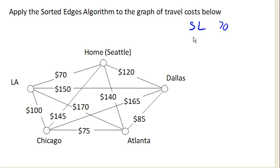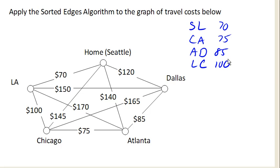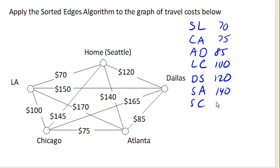The next cheapest is Chicago to Atlanta with a cost of 75. Atlanta to Dallas with a cost of 85. LA to Chicago with a cost of 100. Dallas to Seattle with a cost of 120. Seattle to Atlanta with a cost of 140. Seattle to Chicago with a cost of 145. LA to Dallas with a cost of 150.